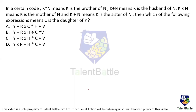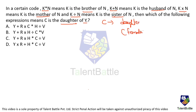In a certain code: K star N means K is brother of N; K plus N means K is husband of N; K into N means K is mother of N; K divided by N means K is sister of N. Which expression means C is daughter of Y? Since C is a daughter, C must be female. In option A, C star H means C is brother — that makes C male, so we can eliminate option A. Similarly, another option with C star can be eliminated.